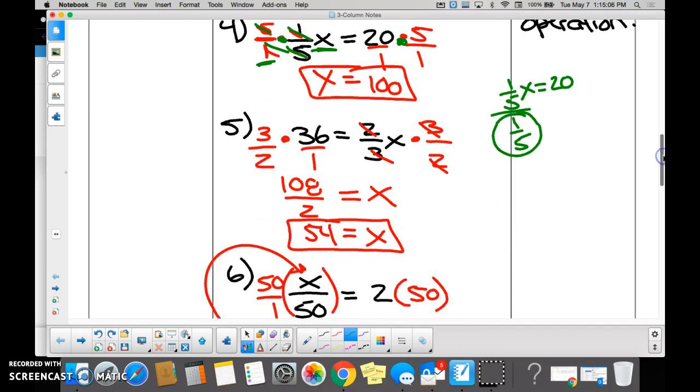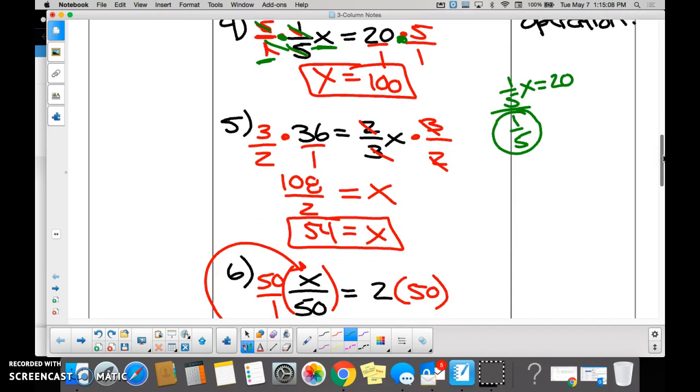Number 5, no different. 2/3x. You divide by 2/3, you're like, wait, you can't divide fractions, can you? So when dividing fractions, we flip it. So this is 2/3, we flipped it, and it became 3/2, and we multiplied, right? And what you do to one side of the equation, you do to the other.